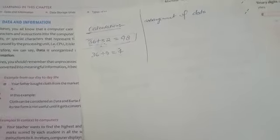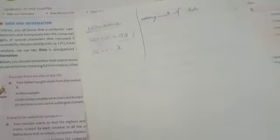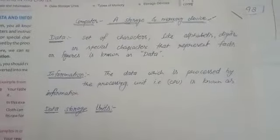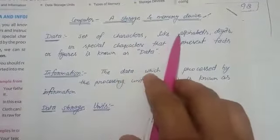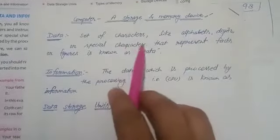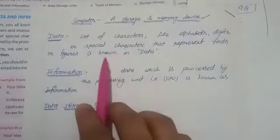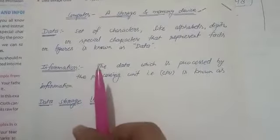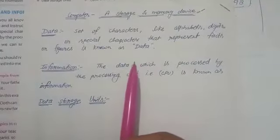And the final result is our output, which is processed by the processing part in the computer processing unit, which is our CPU. So the first one is data. Data definition that you have to write in your copy: set of characters like alphabet, digits, or special characters that represent facts or figures is known as data.